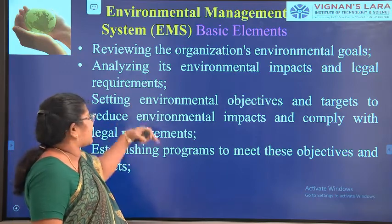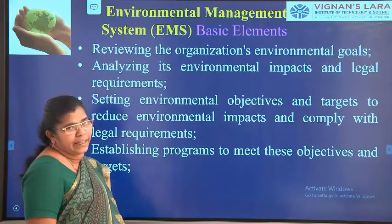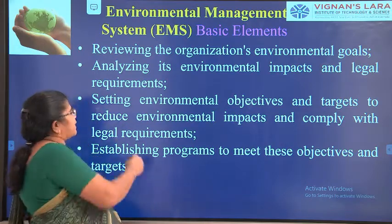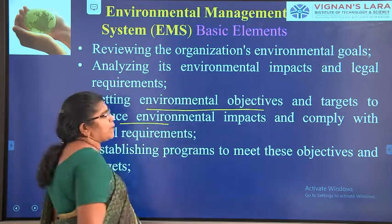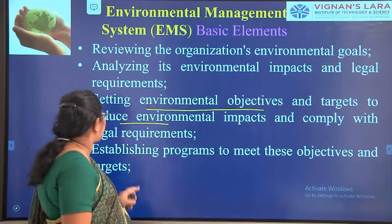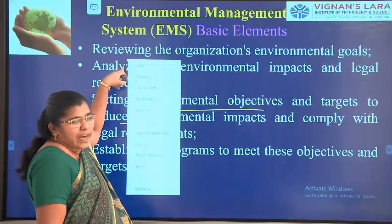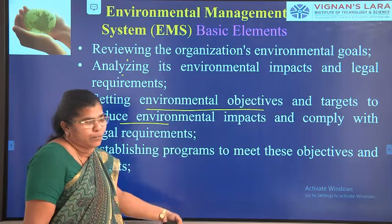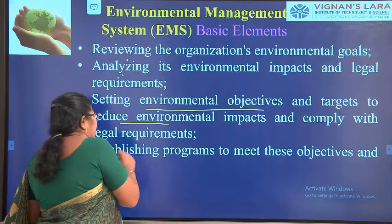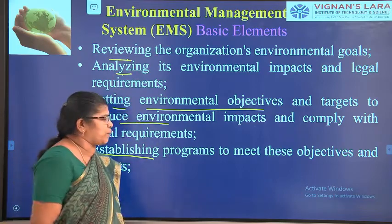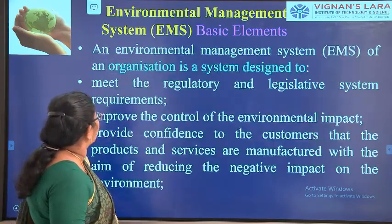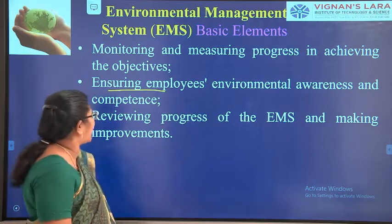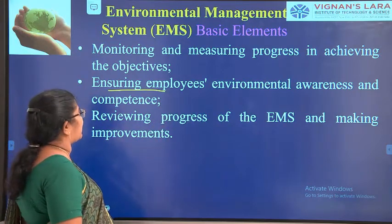EMS involves analysing environmental impact and legal requirements — what is given in the EIA regulations and whether it is compliant. It includes setting environmental objectives and targets to reduce environmental impacts and comply with legal requirements, establishing progress to meet these objectives, monitoring and measuring progress, ensuring employees' environmental awareness and competence, and reviewing progress of the EMS and making improvements. These are the basic elements of EMS.